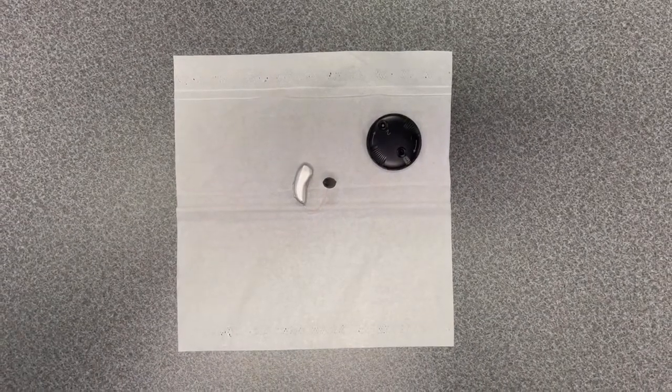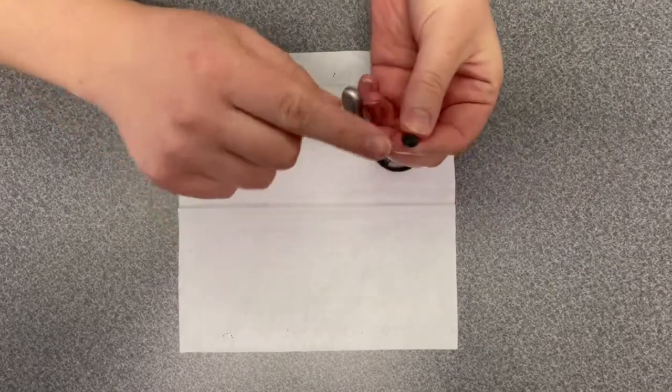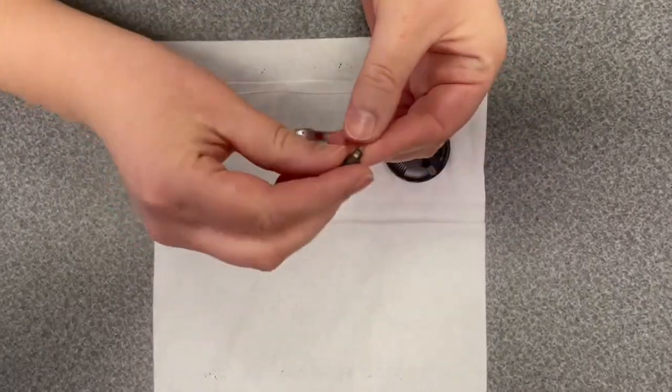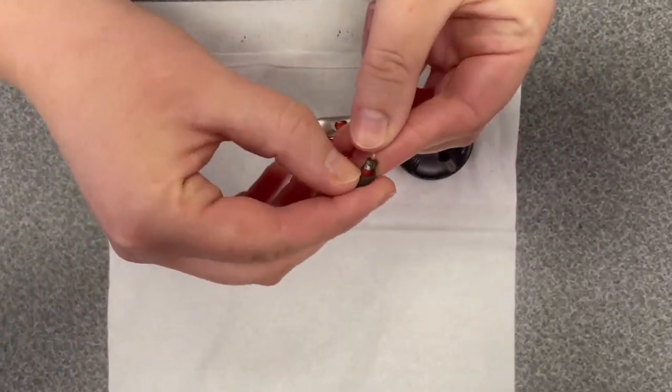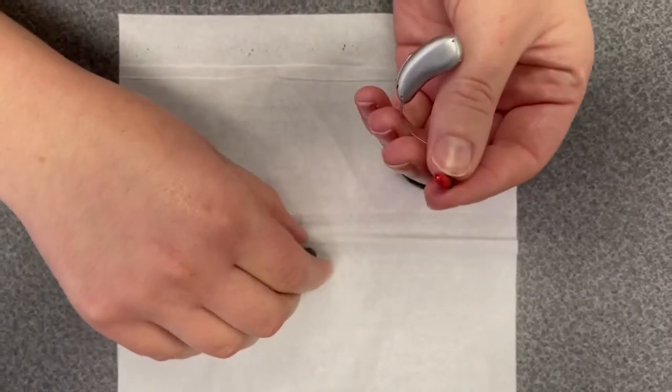To change the dome and the wax guard for a Phonak hearing aid, take the end of the hearing aid that goes in your ear, get your fingernail underneath the dome. You can use a little bit of force, that's okay.